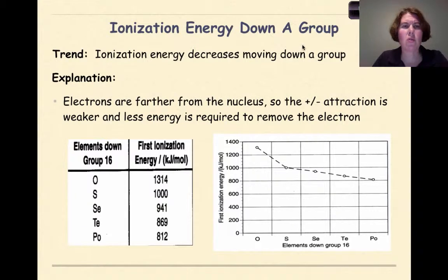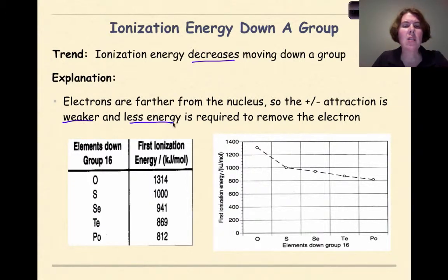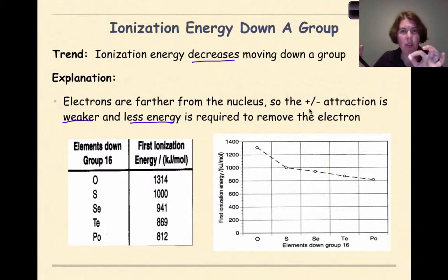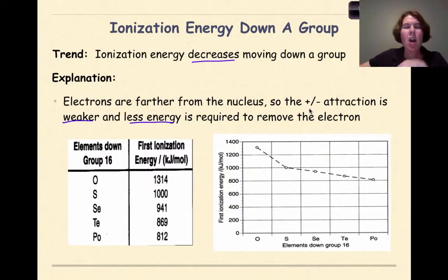Now let's look at ionization energy down a group. The general trend is that ionization energy will decrease moving down a group. Electrons are farther from the nucleus, so the positive-negative attraction is weaker and less energy is required to remove the electron. As we add a shell to each element moving down a group, those valence electrons get farther and farther away from the nucleus, and those core electrons are basically protecting the valence electron from the nucleus.